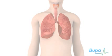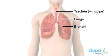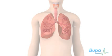Air passes through the trachea and bronchi to the lungs when you breathe. Chronic obstructive pulmonary disease, or COPD for short, is the term used to describe long-term conditions affecting the lungs which cause breathing difficulties. COPD is mainly caused by smoking cigarettes.